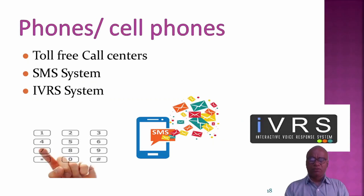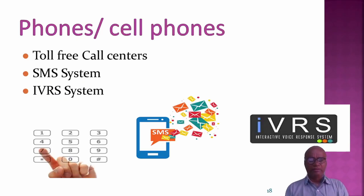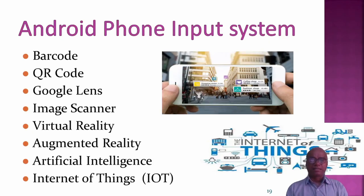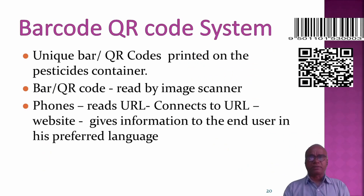If a farmer is having a normal phone, he can use 1-2-3 call centers, SMS systems, and IVRS systems as in the case of gas booking. If he has an Android phone, we have more options like barcode, QR code, Google Lens, image scanner, virtual reality, augmented reality, artificial intelligence, and IoT.